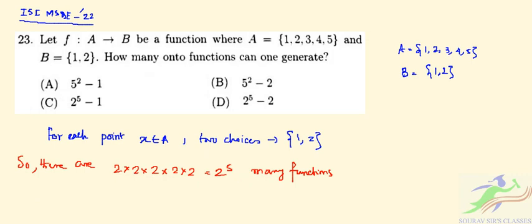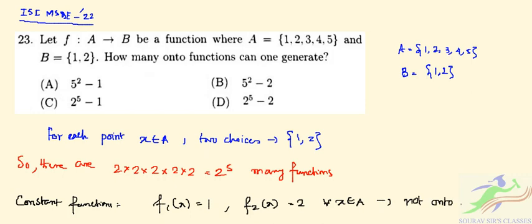But the constant functions, which are the constant functions? So we have this constant functions. Which are these constants? So f₁(x) = 1 and f₂(x) = 2 for all x belongs to A. These are not onto, right?